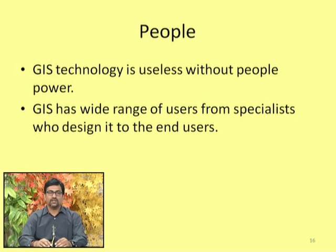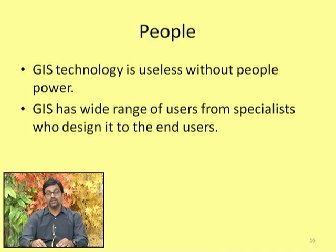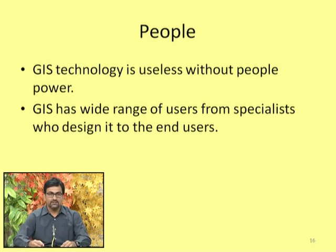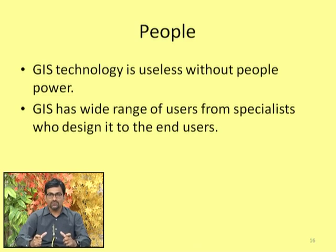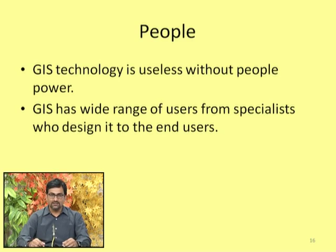The fourth component is people — the users of GIS. GIS technology is useless without people. The advancement of technology led to understanding of how GIS could be a powerful tool in understanding data, geographical features, and taking various decisions. GIS has a wide range of users from specialists who design it to end users who may not know what is inside the application but directly use it to see outputs like maps of Ahmedabad city or locations of specific places in Gandhinagar.